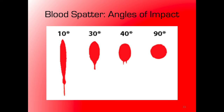Here's a chart showing impacts at 10 degrees, 30 degrees, 40 degrees, and 90 degrees. At 90 degrees — like a passive fall — you get a circular droplet. As the angle decreases from 90, the droplet becomes more elongated and stretched. The smaller the angle, the more blood comes in at an angle rather than straight down, resulting in a more oval-shaped droplet. This chart puts it all together nicely.